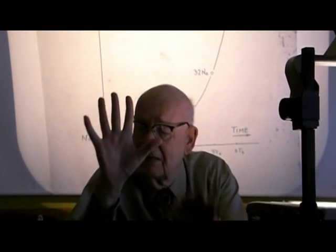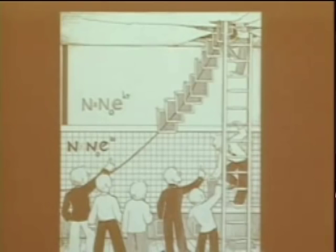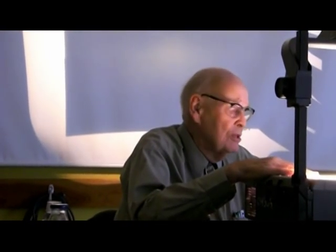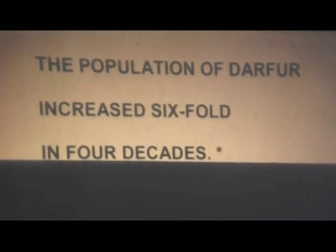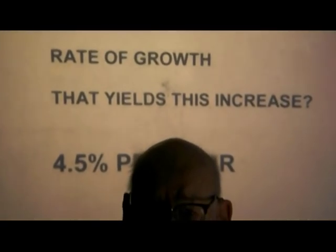In just 10 doubling times, it's 1,000 times larger than when it started. You can see that if you tried to make a graph of that on ordinary graph paper, the graph's going to go right through the ceiling. We've got to get used to the fact that modest growth rates give us enormous growth in modest periods of time. For example, the population of Darfur in Africa was reported to have increased six-fold in four decades — that must be an enormous growth rate. You calculate it: it's only 4.5% per year. Enormous increases from very modest growth rates.